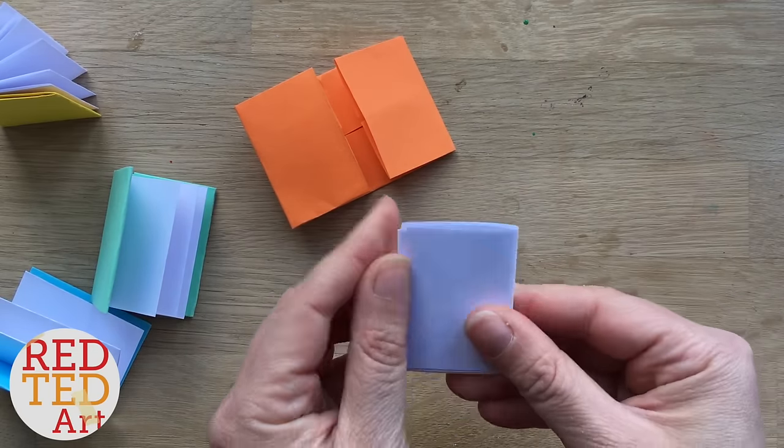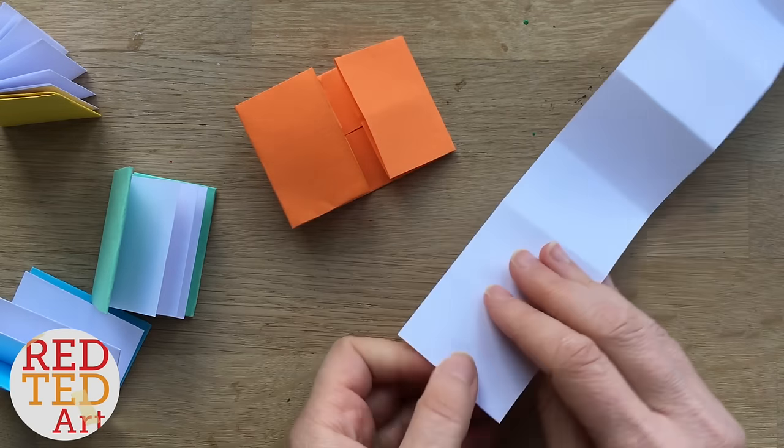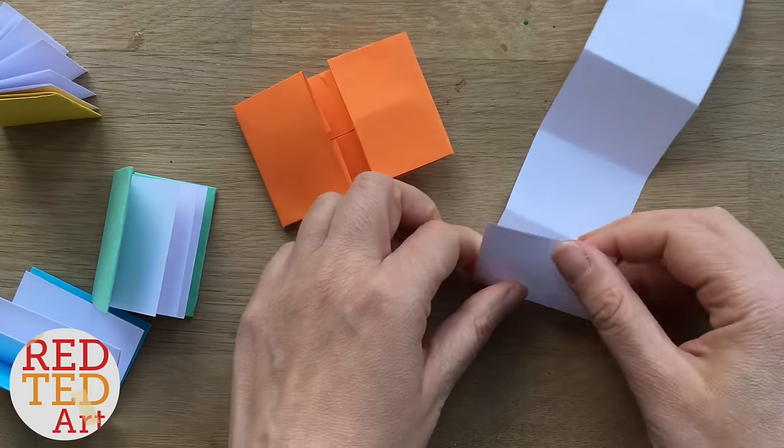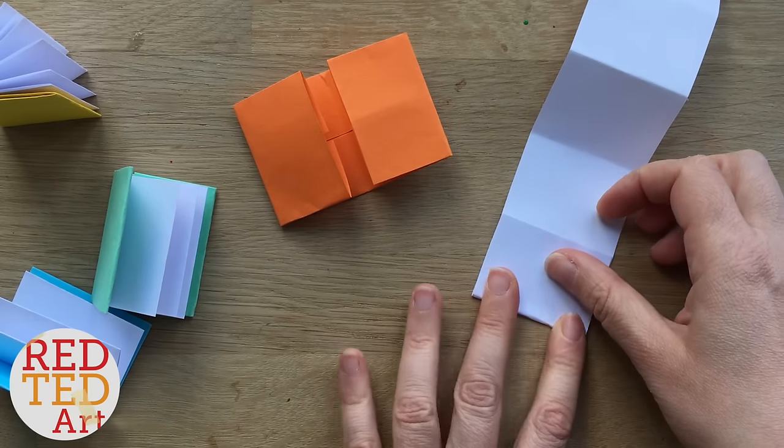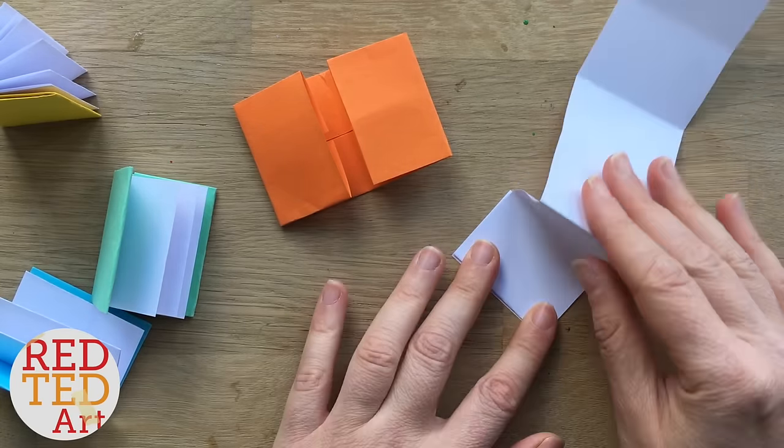I'm going to unfold it now because I just wanted these creases. So the first one is you have to fold it in this direction. Now I'm going to do a concertina fold in that direction, fold in this direction.